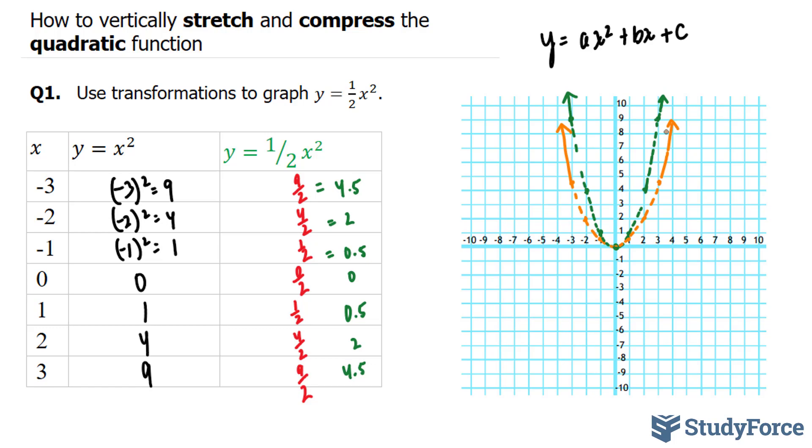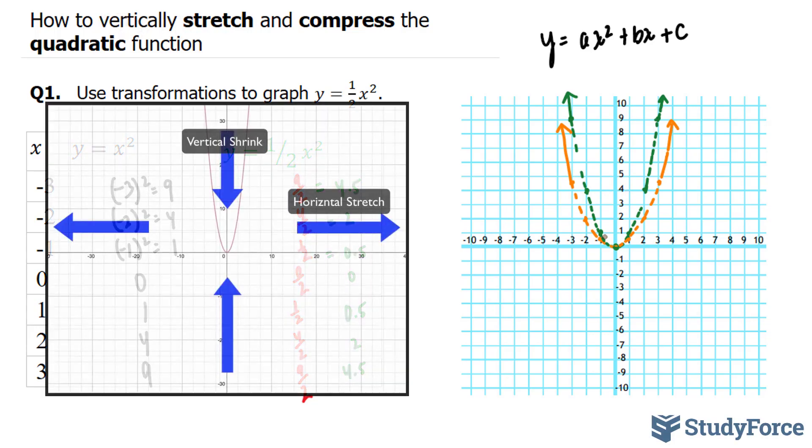So what happened? What is the difference between what's in green and what's in orange? This is referred to as a vertical compression. Now, I know it's getting wider, so you're probably programmed to think that it is being stretched, but remember,